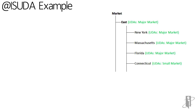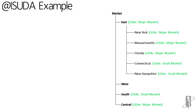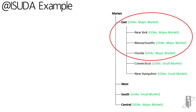In my outline, I've applied the UDA "major market" to not only some states — New York, Massachusetts, and Florida — I've also applied it to a couple of regions: East and Central. This is one of the powerful things you can do with UDAs that you can't do with, say, attribute dimensions.